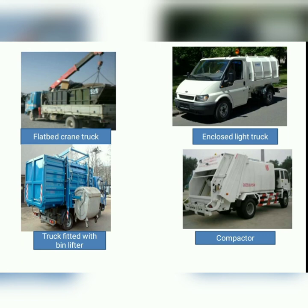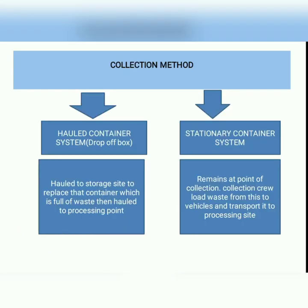Here is a list of vehicles used for secondary collection: flatbed crane truck, enclosed light truck, truck fitted with bin lifter, and compactors. These are sometimes also used for primary collection purposes.